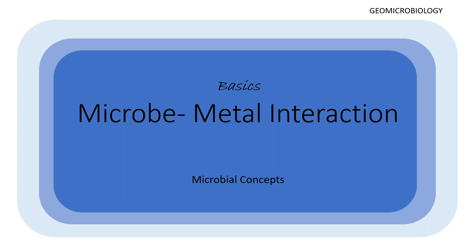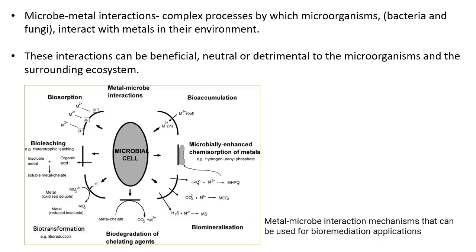In the environment, there are various niches where microbe-metal interaction is going on continuously. Microbe-metal interactions are complex processes by which microorganisms like bacteria and fungi interact with metals in their environment. These interactions can be beneficial, neutral, or detrimental to the microorganisms and their surrounding ecosystem, depending on what type of interaction it is.